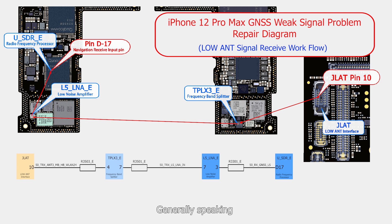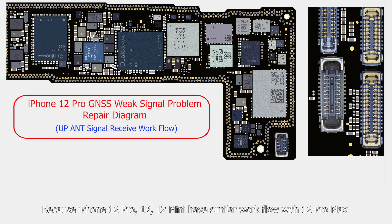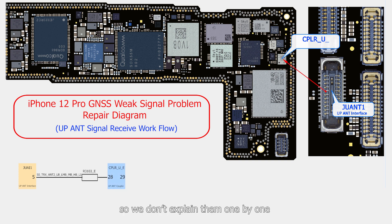Generally speaking, when GNSS signal has a problem, we can solve it according to the above procedure and replace components correspondingly. Because iPhone 12 Pro, 12, and 12 mini have similar workflows with the 12 Pro Max, we don't explain them one by one. Please enjoy the following diagrams.